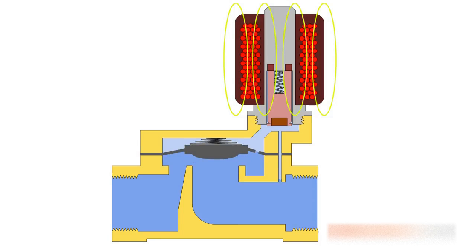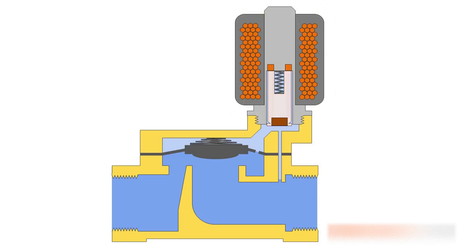This reduces the pressure in the upper chamber and the valve will open. As soon as the electric current is interrupted, the pilot port will be closed again. The pressure in the upper chamber will rise and close the valve.